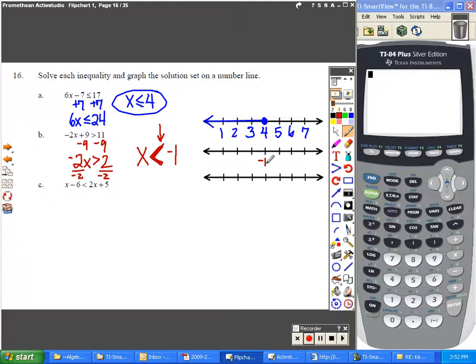So you need a negative 1 on your graph. If you'd like to fill in the rest of the information, you may. This is now an open dot, because when we say it's just less than negative 1, you don't have to include negative 1 in your answer.